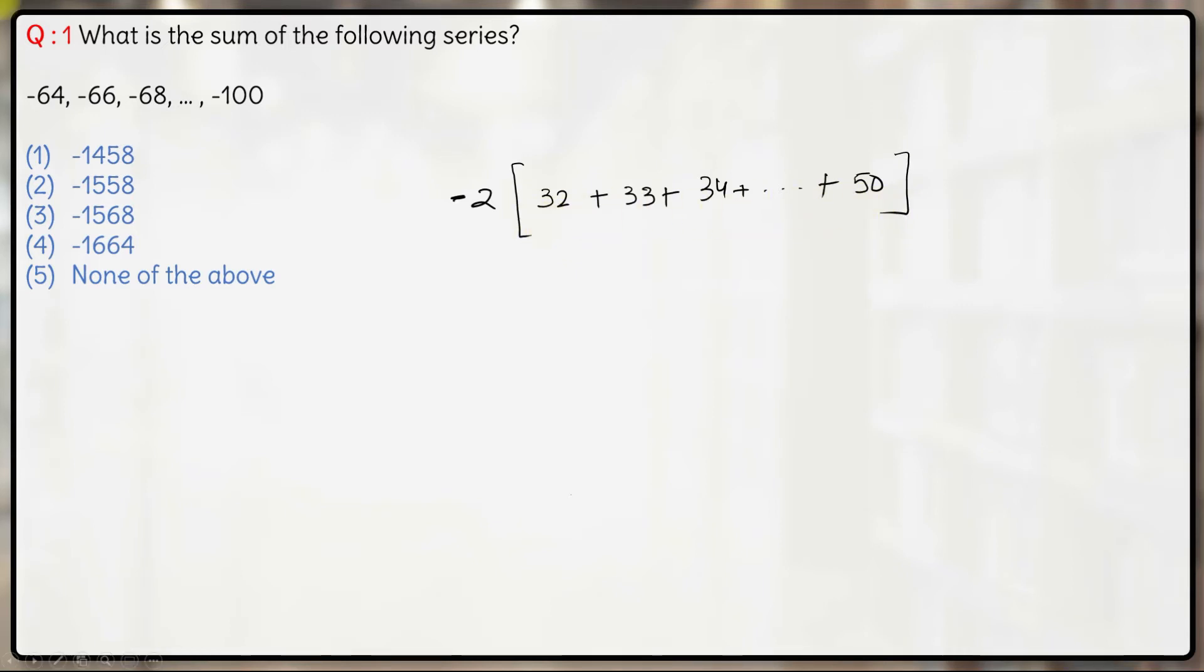So now if you see this is an arithmetic progression and we know sum of an arithmetic progression is the number of terms into first term plus last term by 2.